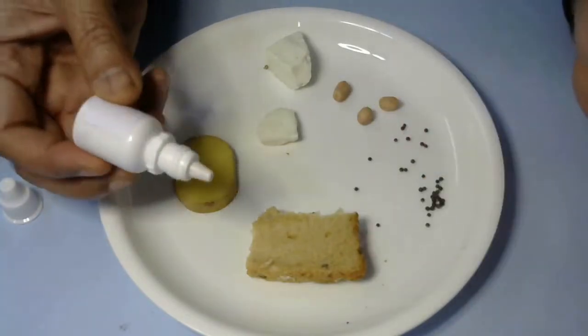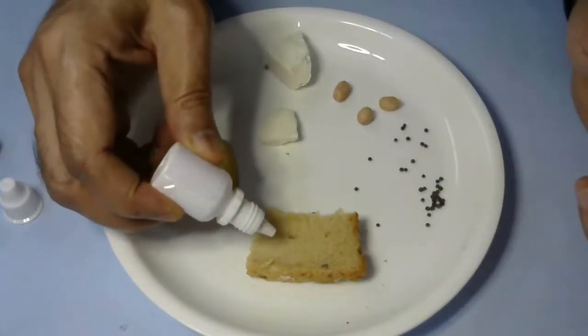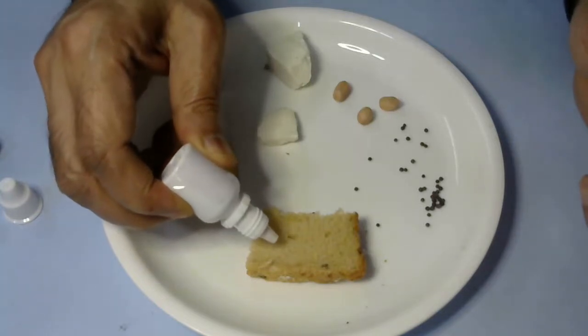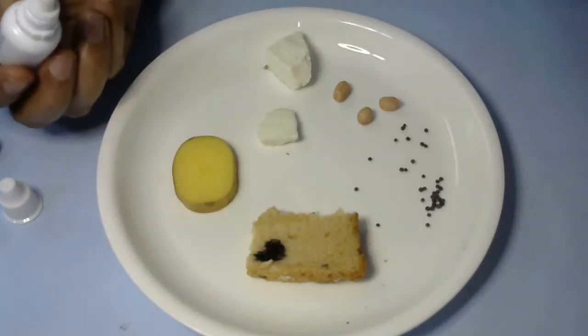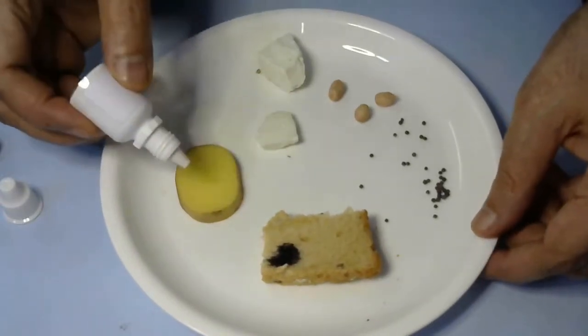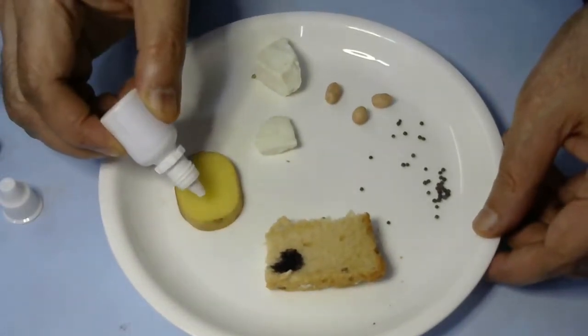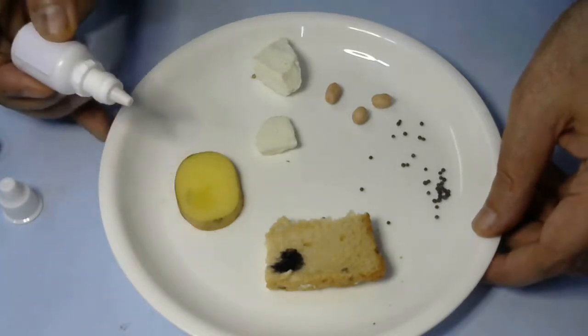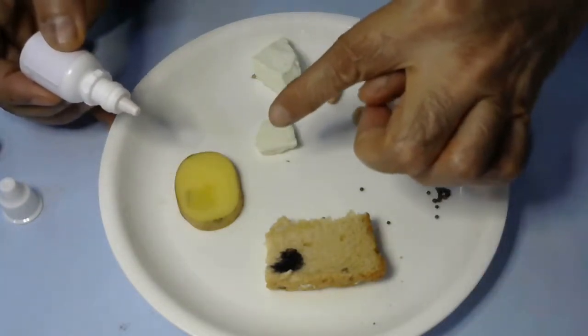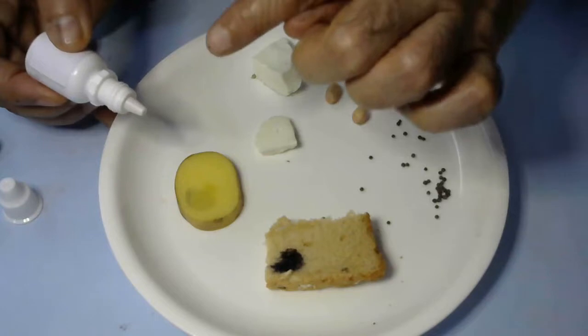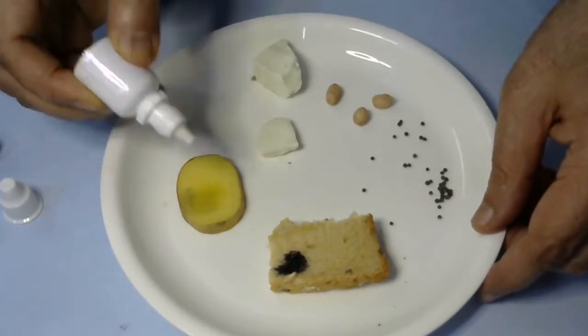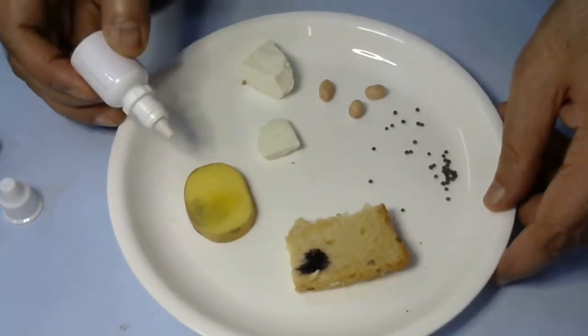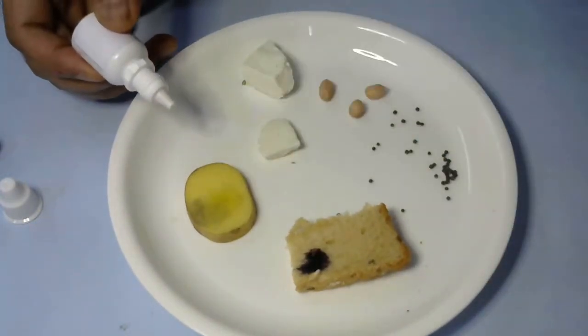Let's start with bread, which contains wheat flour. When we put a few drops, you'll see it instantly turns dark blue or black. Let's try this on potato. Potato also turns blackish, but it will take some time. Let's put a few more drops and wait. You can see it has started turning blackish.